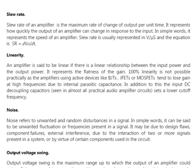Output voltage swing is the maximum range up to which the output of an op-amp could swing. It is measured between the positive peak and negative peak. In a single supply amplifier, it is measured from the positive peak to ground. It usually depends on factors like supply voltage, biasing, and component rating.